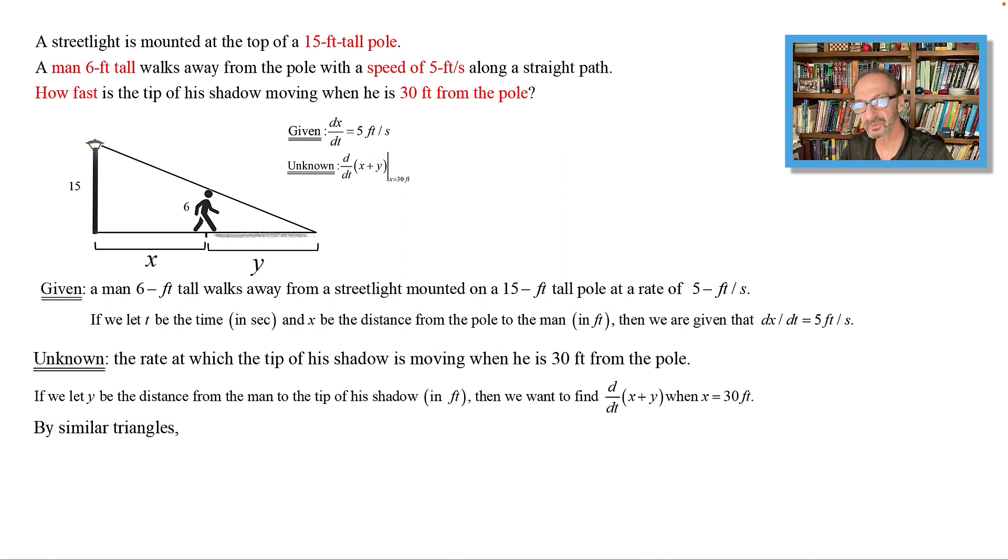By similar triangles, we could relate y and x together this way. The big triangle is 15 with x plus y, and the small triangle right here is 6 and y. Writing the proportion using similar triangles, we have 15 to 6 is equivalent to x plus y to y.